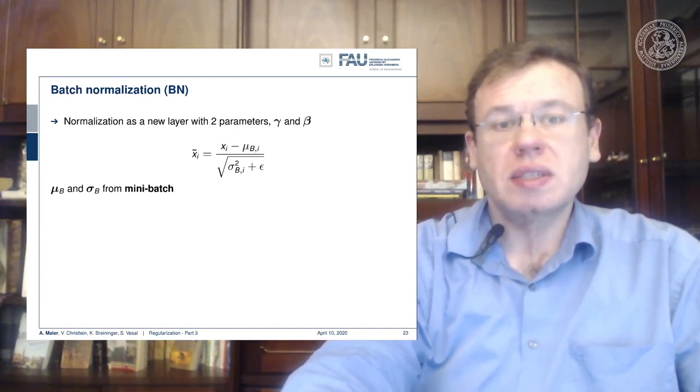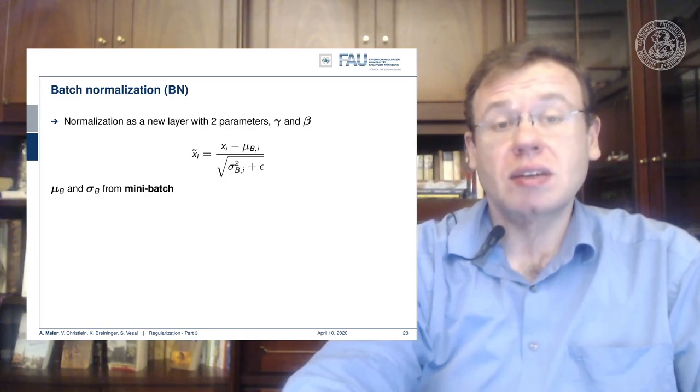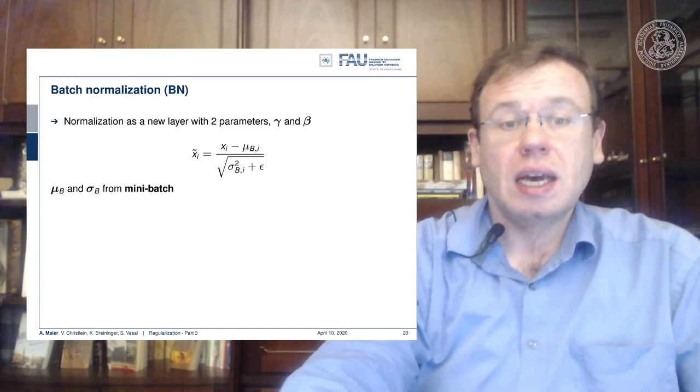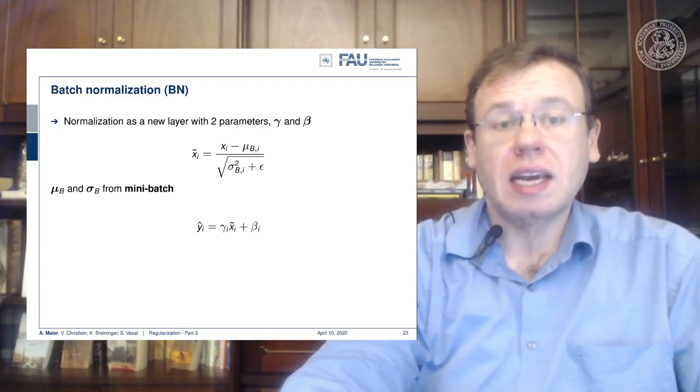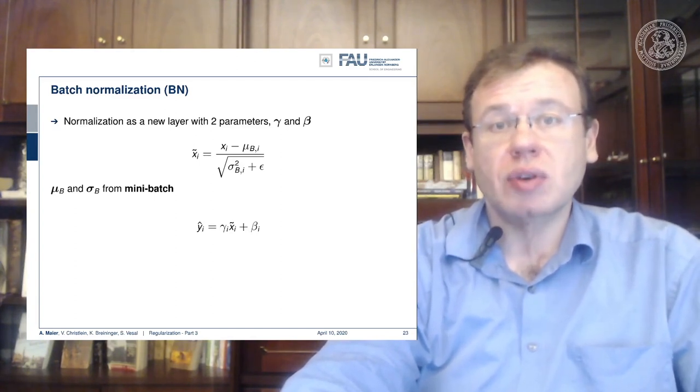And then you use that to normalize the activations of the input to this layer to have a zero mean and a unit standard deviation. So this is calculated on the fly throughout the training process. And then you scale at the output of the layer with the trainable weights beta and gamma. You scale them appropriately as desired for the next layers.